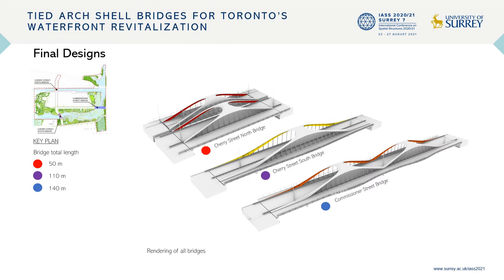Here you see four of the six bridges, which is the phase one scope. There is a second phase where the missing two bridges will be added. While all bridges have different dimensions, they all follow the same design principles and form a family of bridges. The Cherry North Bridge on the right side is the shortest of all bridges with one span of 50 meters. The Cherry South Bridge has a larger center span of 50 meters and two smaller side spans, and the Commissioner Street Bridge has two equal center spans of 50 meters and two smaller side spans.